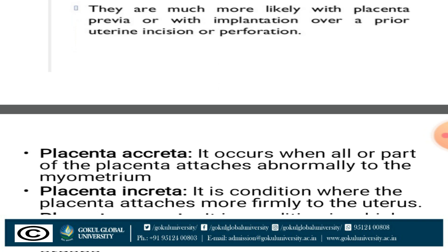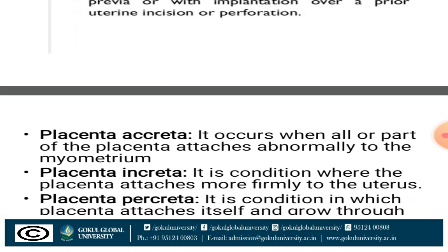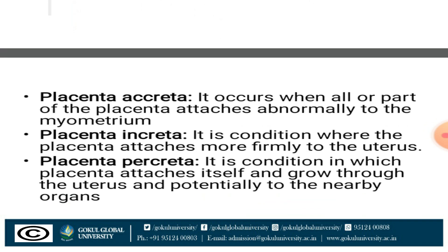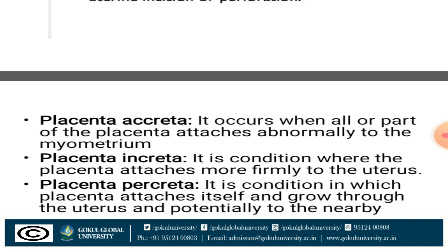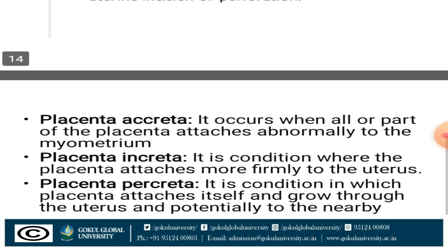Next are placenta accreta, increta, and percreta. These abnormalities are serious variations in which trophoblastic tissue invades the myometrium to varying depths. The trophoblastic tissue of the placenta is attached to or invades the myometrial layer of the uterus. There are three layers of the uterus: myometrium, endometrium, and perimetrium. In placenta accreta, increta, or percreta, the trophoblastic tissue of the placenta develops and attaches into the myometrium.